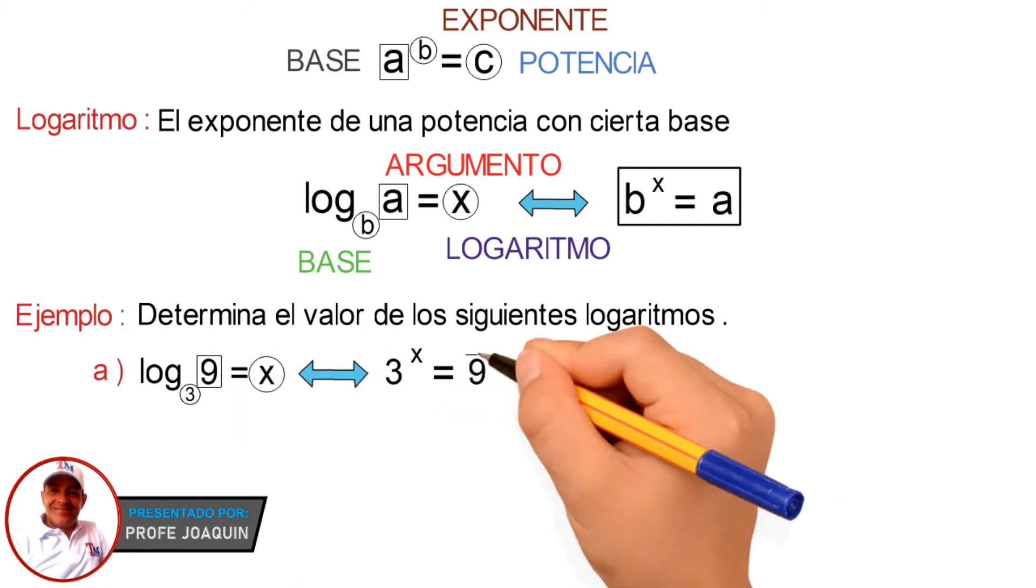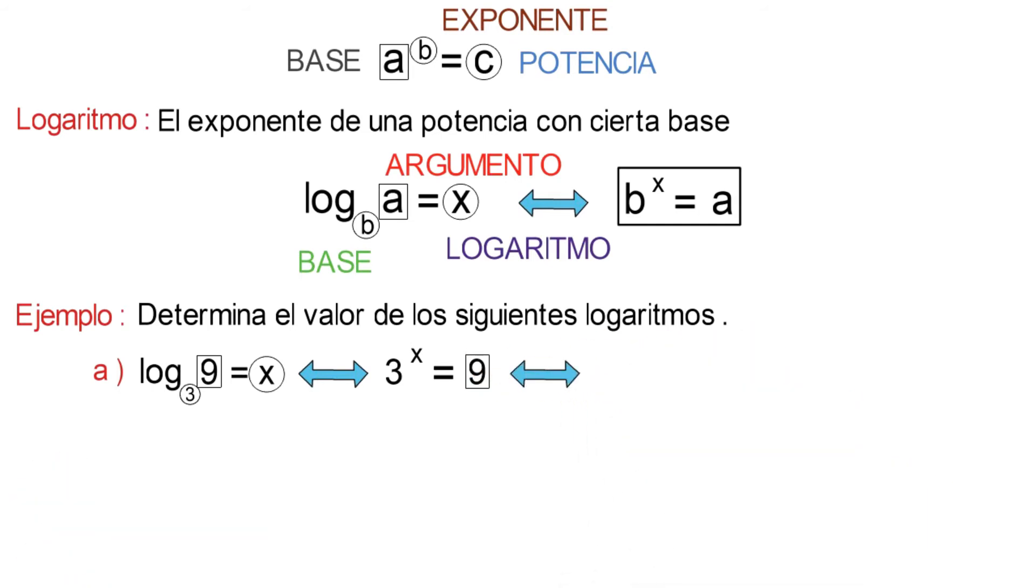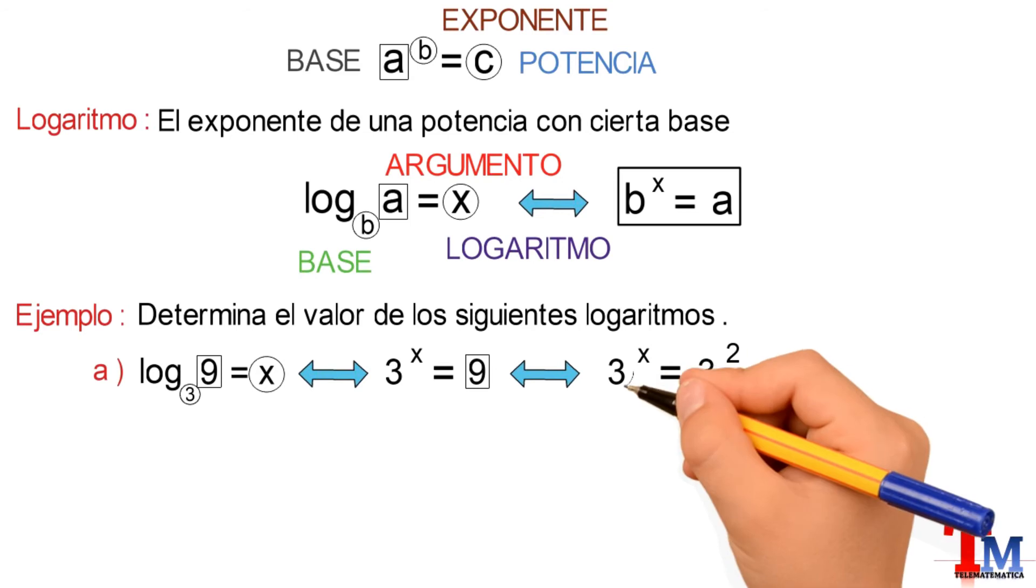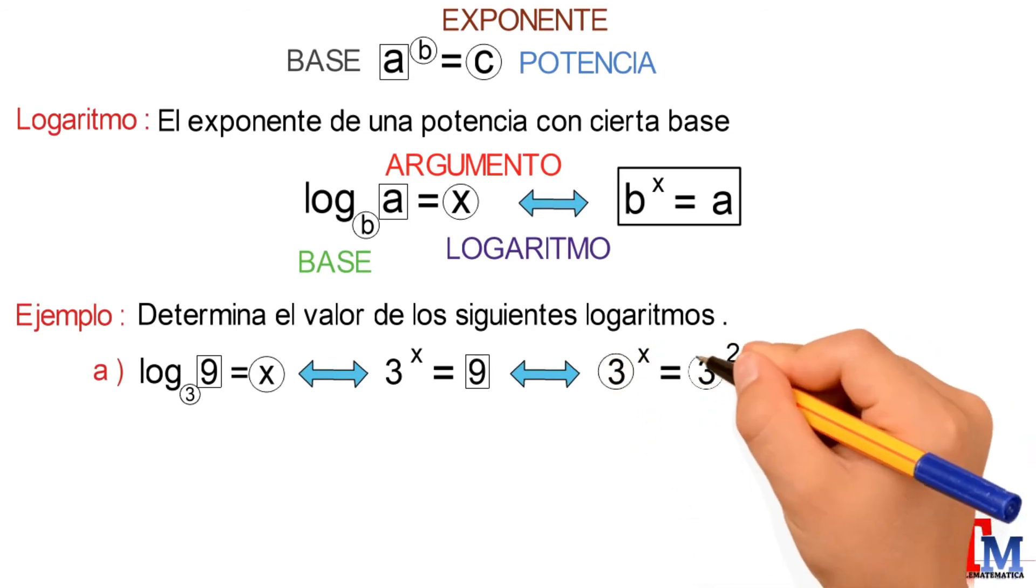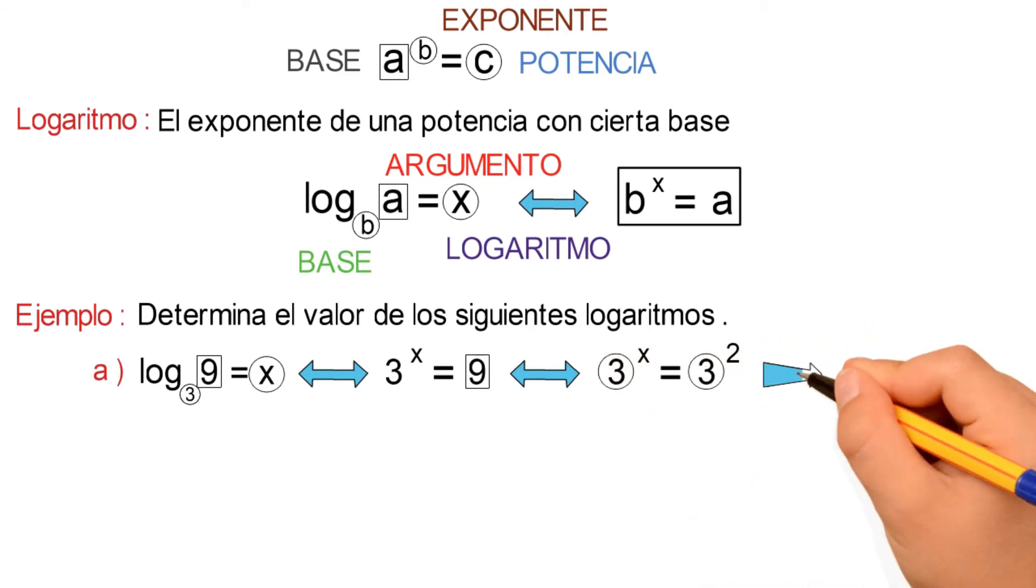Ahora bien, el 9 lo escribiremos como una potencia de base 3, y nos quedaría 3 elevado al cuadrado. Luego, por propiedad de la potencia, como las bases son iguales, entonces los exponentes también lo son. Por lo tanto, el valor de X es 2.